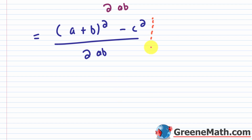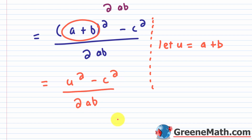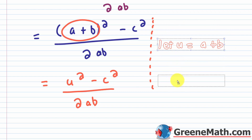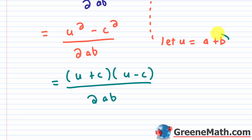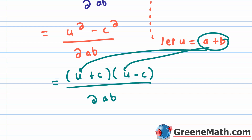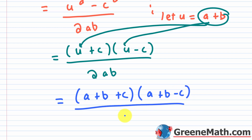To make this easier, use a substitution: let U equal A plus B. Then we have U squared minus C squared over 2AB, which is a clear difference of squares. This factors into the quantity U plus C times the quantity U minus C, over 2AB. Substituting U equals A plus B back in, we get 1 plus cosine C equals the quantity A plus B plus C times the quantity A plus B minus C, all over 2AB.